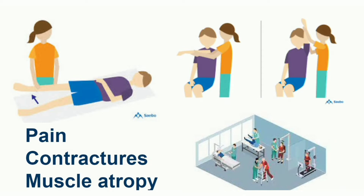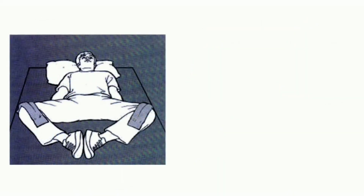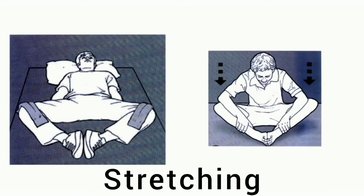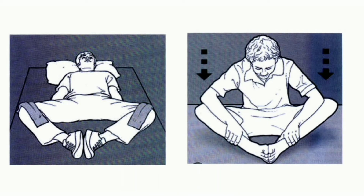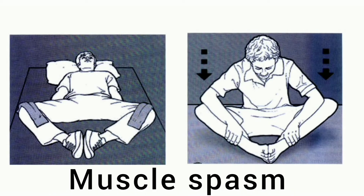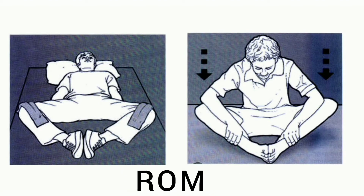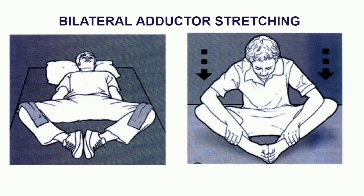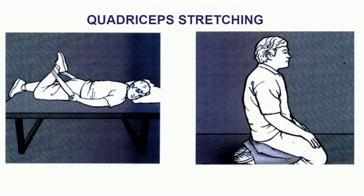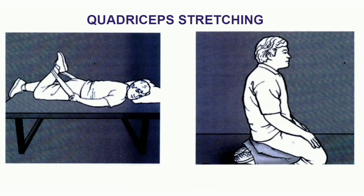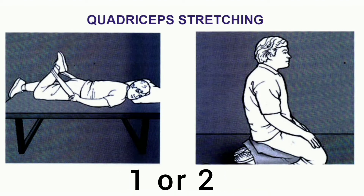For active exercises, the first type is stretching or flexibility exercises. These reduce muscle spasticity and increase range of motion. For paraplegic patients, the muscles that need stretching include bilateral adductor stretching and quadriceps stretching. Stretching should be performed slowly — a stretch hold of 10 seconds is effective — and done once or twice a day.